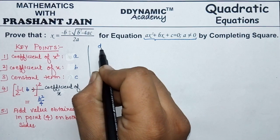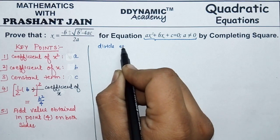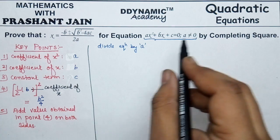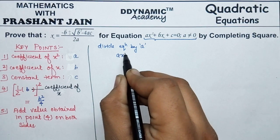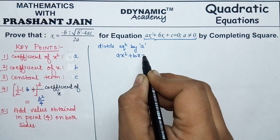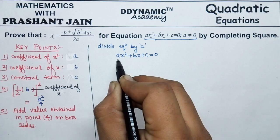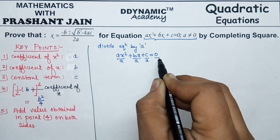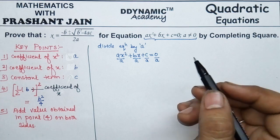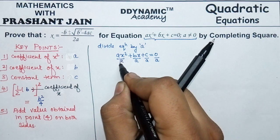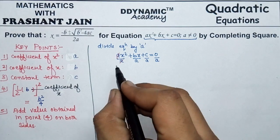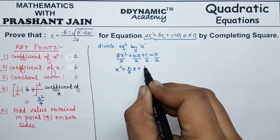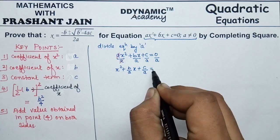First of all, divide the equation by the coefficient of x², that is a. Dividing ax² + bx + c = 0 by a on both sides, each term on the left-hand side as well as the right-hand side is divided by a, and a cancels with a. The remaining equation is x² + (b/a)x + c/a = 0.